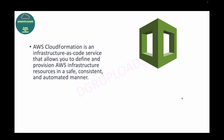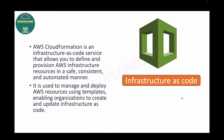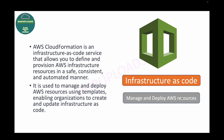CloudFormation helps us define and provision infrastructure in AWS by making use of code. This infrastructure is created in a safe, consistent, and automated manner. Every time you create the infrastructure it is consistent because you're using the same piece of code. For example, you can automate the creation of an EC2 instance, an S3 bucket, and an IAM role all together.